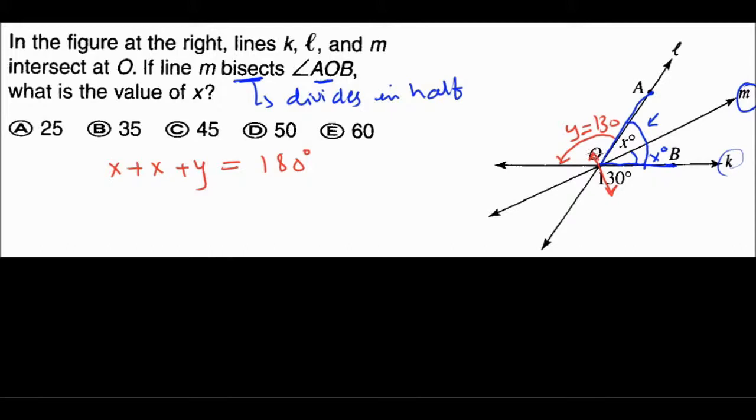So you have 2X plus 130 equals 180. So you will get 50 equals 2X, and X equals 25 degrees, which is A. Nice and easy, right?